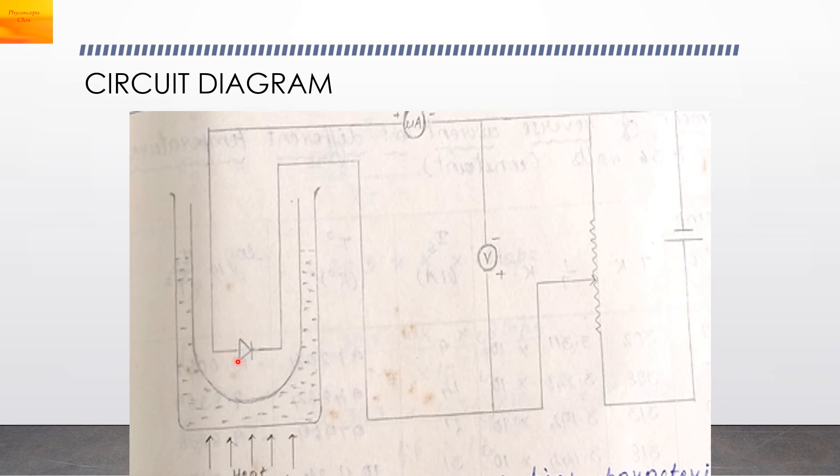This is the circuit diagram. We can see the P-N junction diode connected in reverse bias mode. The N side of the diode is connected to the positive terminal of the battery and the P side is connected to the negative terminal. You have a microammeter and a voltmeter and this rheostat is to vary the voltage. The diode is kept in a test tube which is surrounded by water, and later on we will be heating this diode.